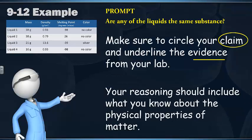And then in 9-12, you give them the prompt, you have them write their conclusion, and then you go back, circle your claim, underline your evidence, and make sure your reasoning should include something about the physical properties of matter. And that leaves it more open-ended that they're still making sure that they have each part that they need.